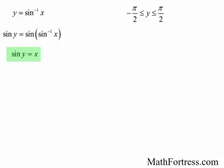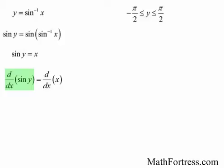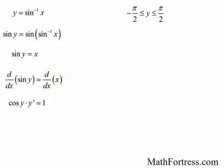The first step is to take the derivative of both sides. The derivative of sine of y is equal to cosine of y times y prime, and the derivative of x is just equal to 1. The second step is to solve for y prime. Solving for y prime, we have that the derivative is equal to 1 over cosine of y.